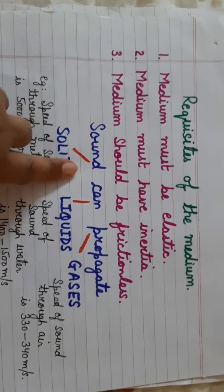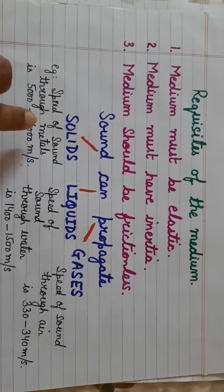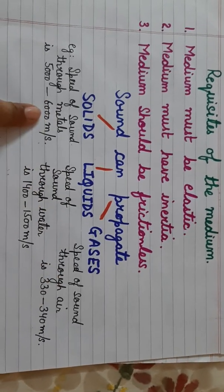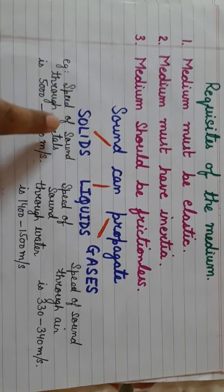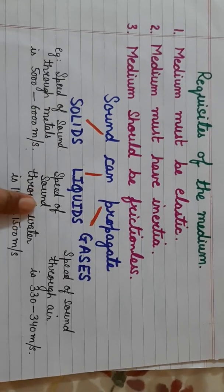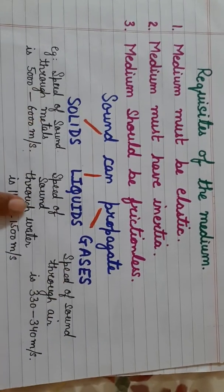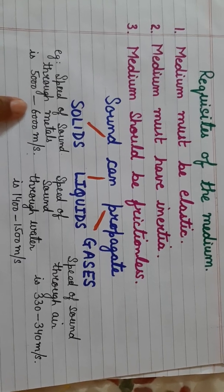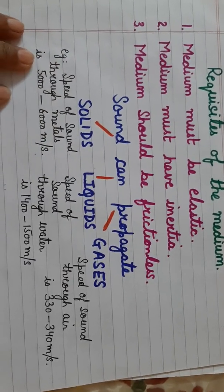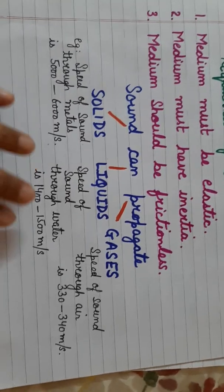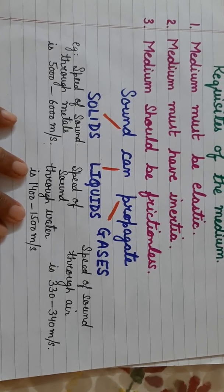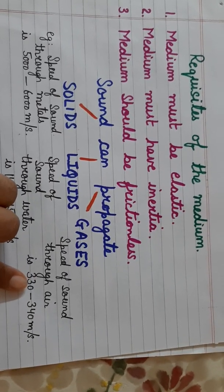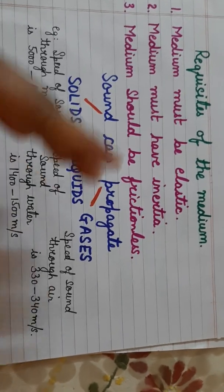Sound needs a medium to propagate — it can travel through solids, liquids, and gases. Because all three types of mediums have different arrangements of molecules, the speed of sound varies. In metals, the speed of sound is between 5000 to 6000 meters per second — maximum, because they have very tightly packed molecules. In liquids, it is around 1400 to 1500 meters per second. And in gases, the speed of sound is the least — 330 to 340 meters per second. So the speed of sound is different in different media.